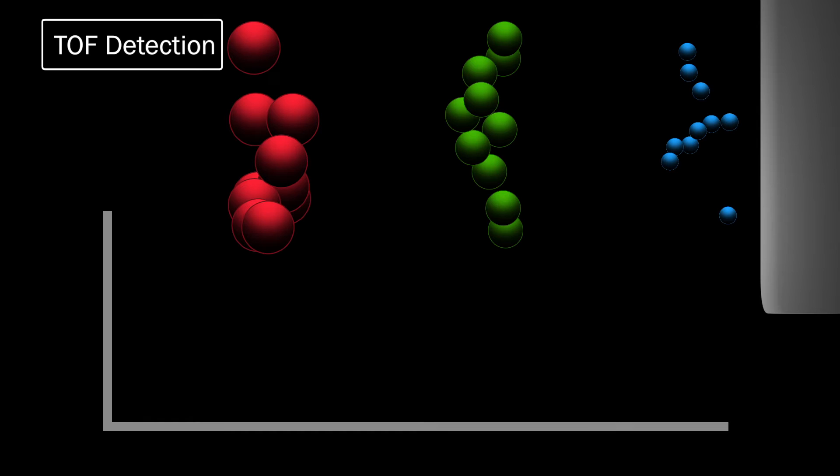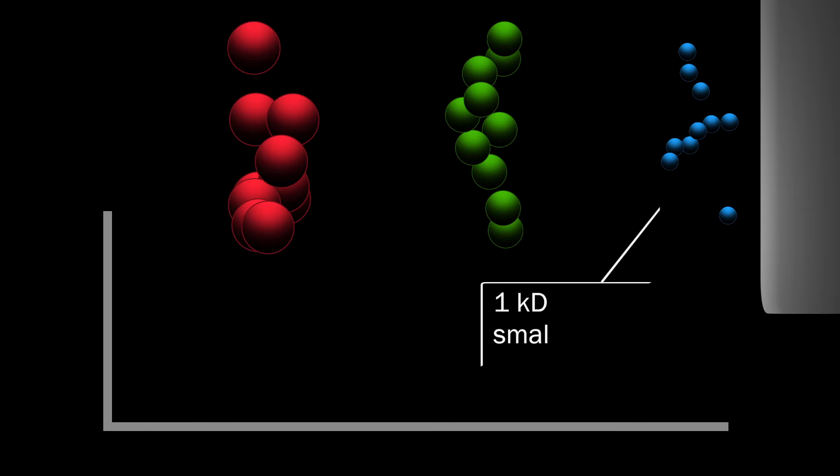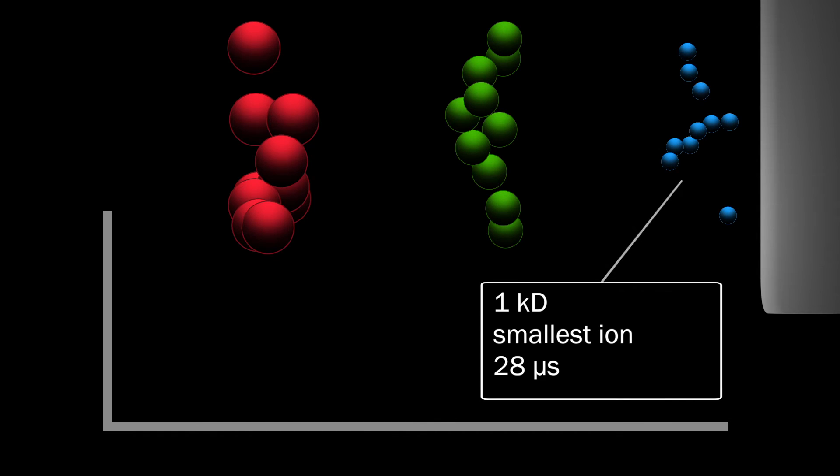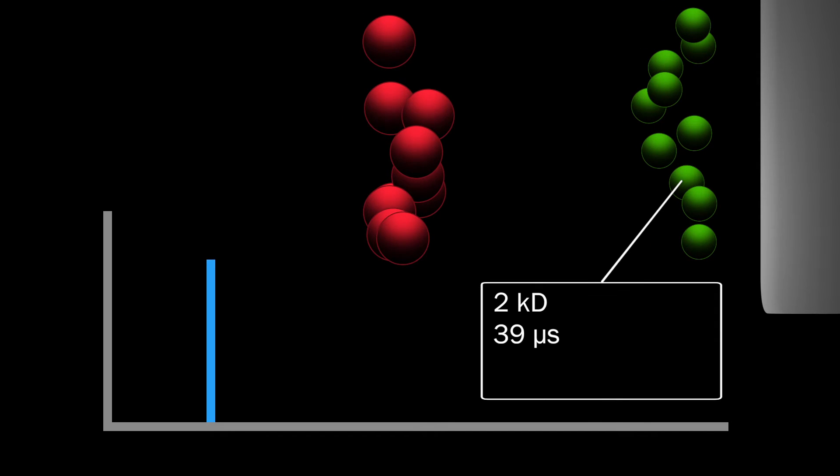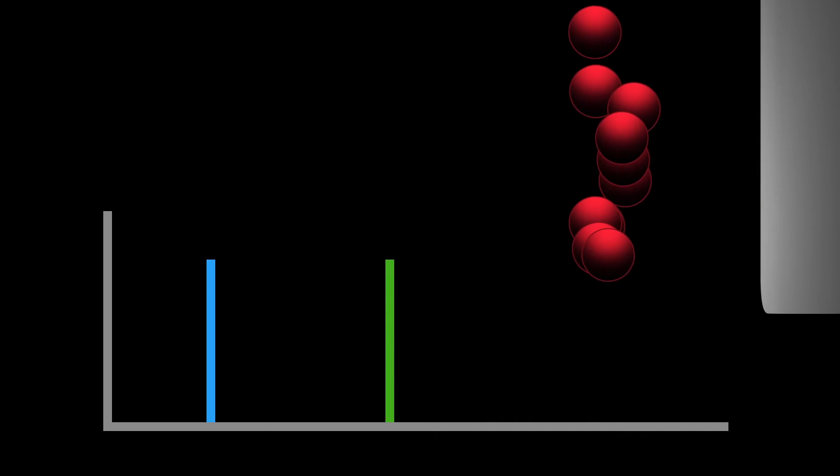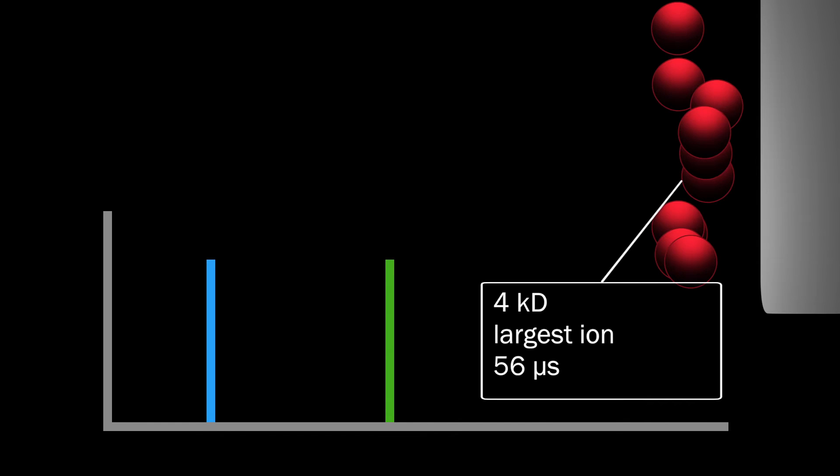The TOF detector then records the time it takes for the groups of ions to travel a certain distance. From our previous examples, for a standard 1.5-meter flight, the smallest ion would reach the detector in around 28 microseconds, the next at around 39 microseconds, and the largest ion in around 56 microseconds.